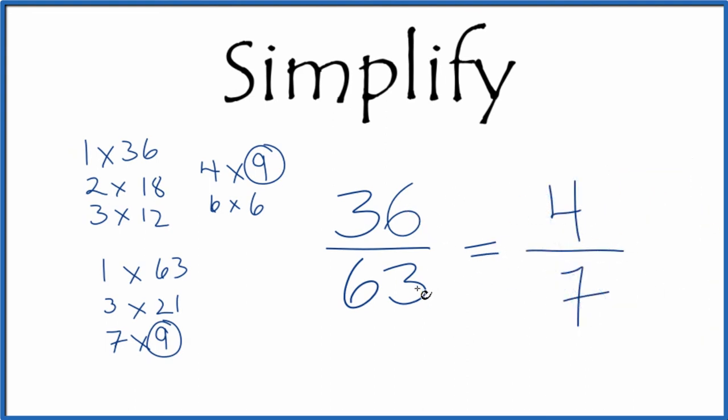They have the same value. If you divide 36 by 63 or 4 by 7, you get the same decimal. We've just simplified 36/63 down to 4/7 by finding a common factor—the greatest common factor here was 9.